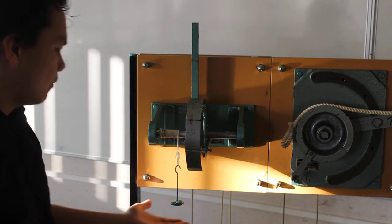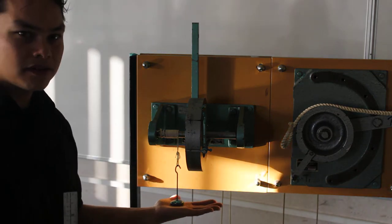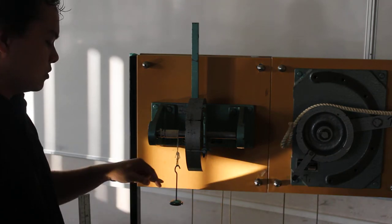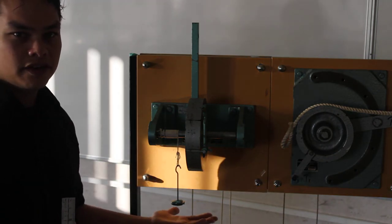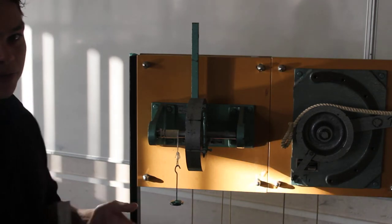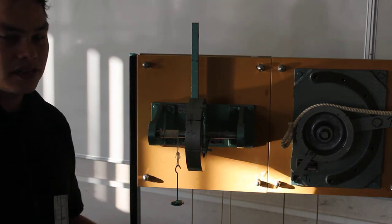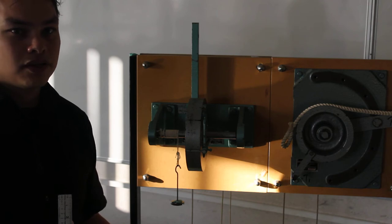We've already calculated the amount of mass required to overcome friction in the bearings. I've left that mass on. Now what we can do is add some additional masses and find out how much time it takes for that additional mass to make our setup move.